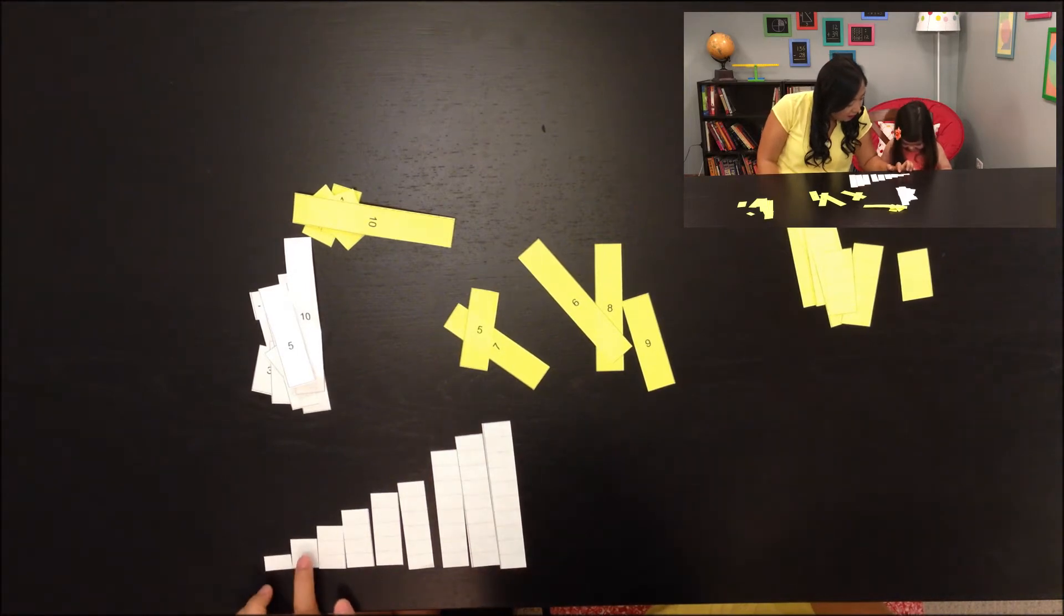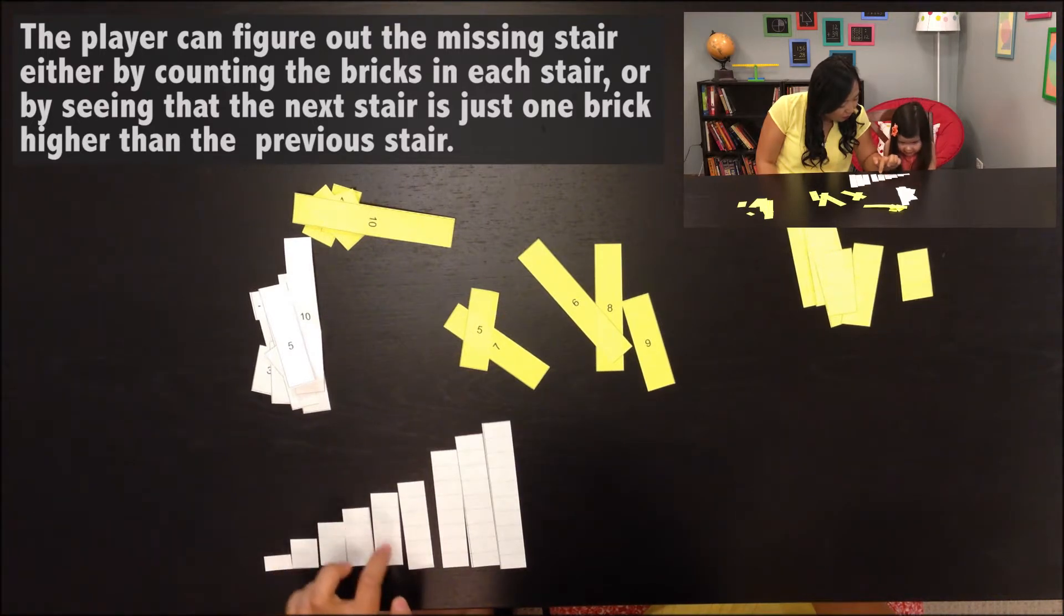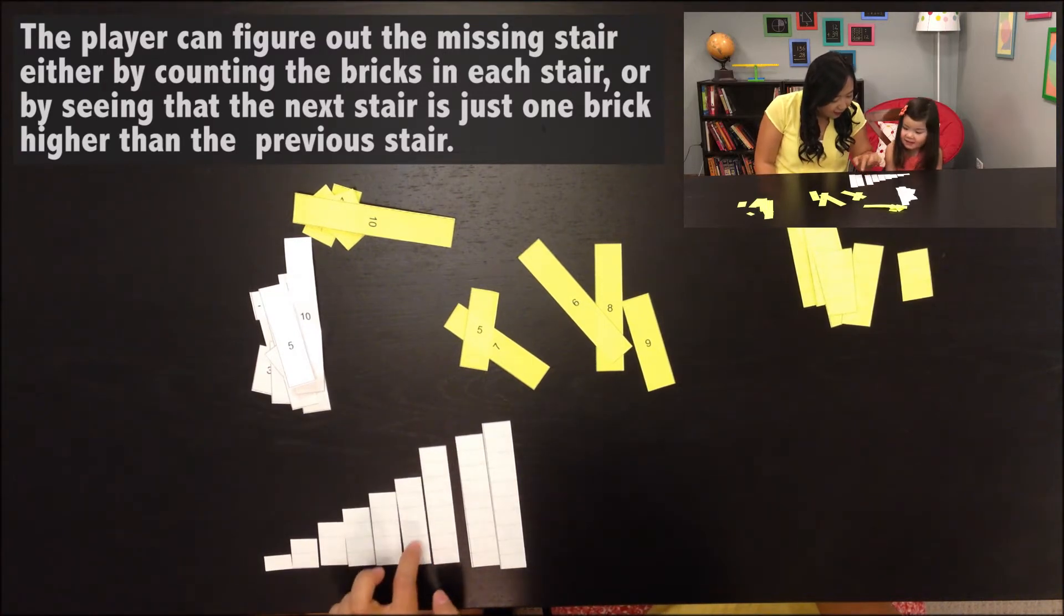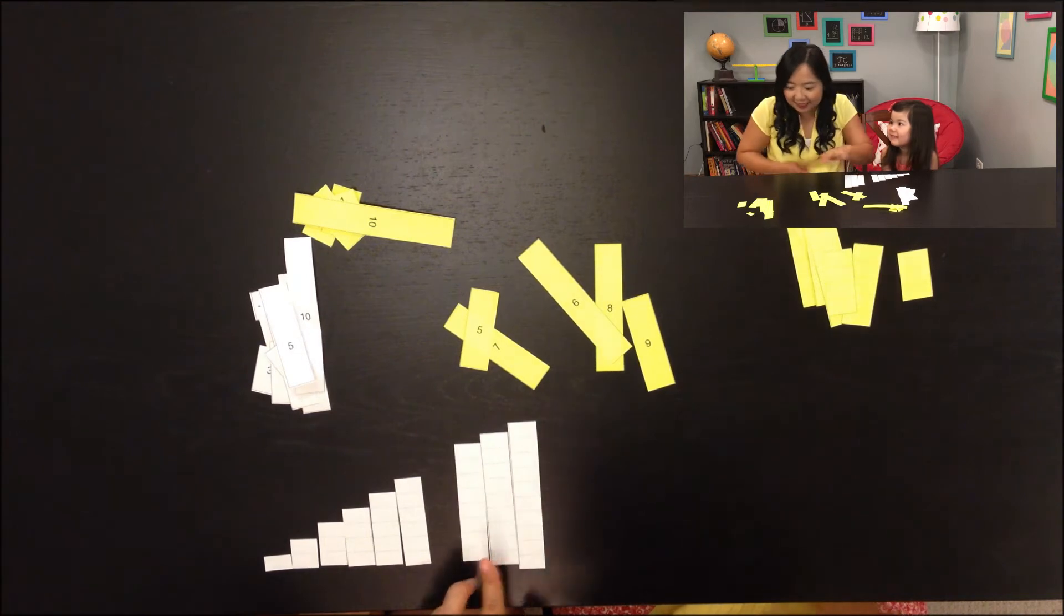1, 2, 3... 1, 2, 3, 4, 5, 6... oh, 6, and then 8. Are we missing 7? Let's see. Can I find 1, 2, 3, 4, 5, 6... 6.